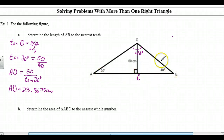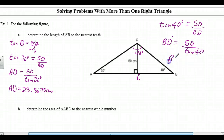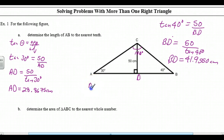Now we're going to find BD. We have 40 degrees, opposite and adjacent, so we're going to use the tangent ratio again. We'll write the tan of 40 degrees is equal to 50 over BD. BD is 50 divided by the tan of 40 degrees, which is equal to 41.9550 centimeters. Knowing that we're going to round our final answer to the nearest tenth, we carry a few more decimal places so that when we do our rounding to the tenth, we get the accurate value. So AB is equal to AD plus BD.